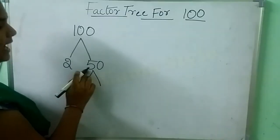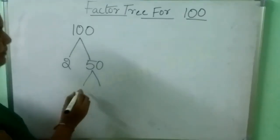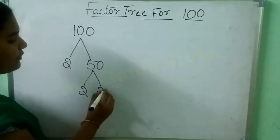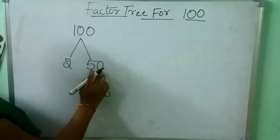Then here 50 is there. So in which table will 50 come? 2 times 25. 2 times 25 is 50.